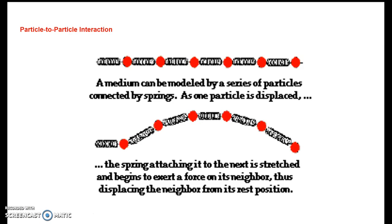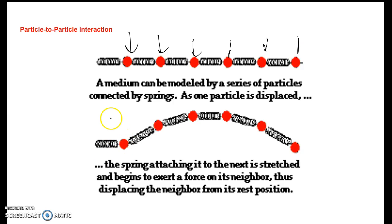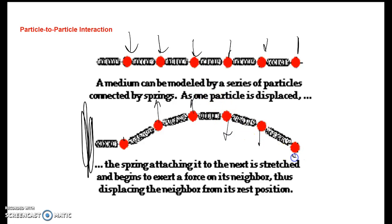Now let's look at this on a particle level. If we have our medium as particles — using the slinky as an example — these particles are all standing still at a rest position. Once the spring is moved, these particles will move. If the spring is moved up and down, particles will displace upward, then start to come back down. We see the particles moving up and down from their rest position, displacing from that rest position.